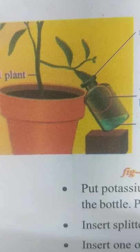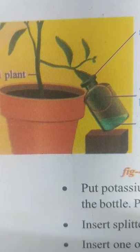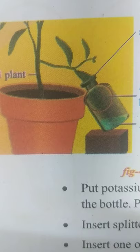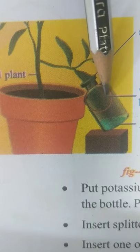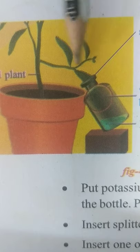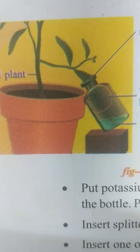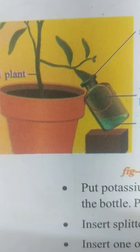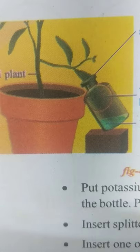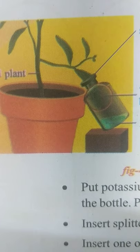For this we need a potted plant with long leaves. Long leaves are very important because we are selecting a very healthy leaf — 50% of the leaf is kept in the bottle and another 50% of the leaf is kept outside. For this purpose we need long leaves. We also need some KOH solution, potassium hydroxide. The property of potassium hydroxide is it absorbs carbon dioxide in the surroundings. That is also required in this experiment, and we need some iodine solution as well.